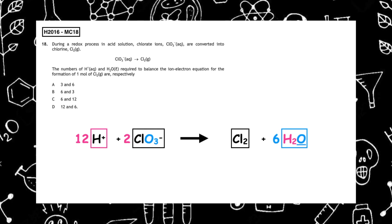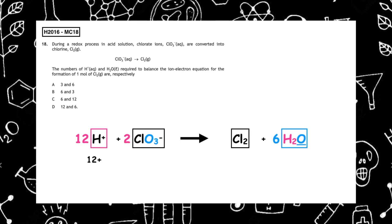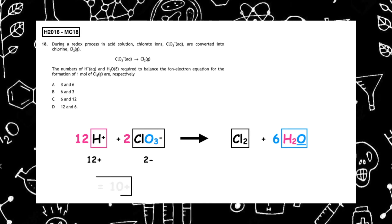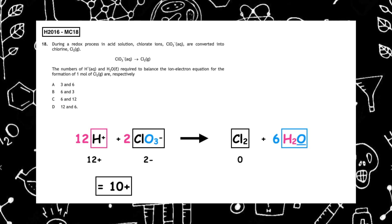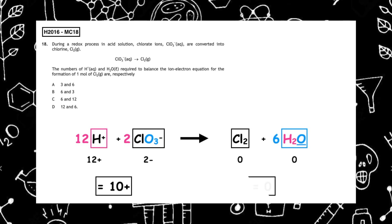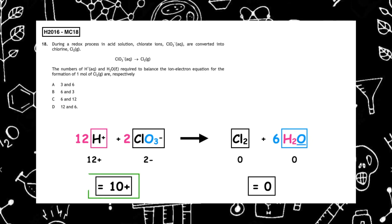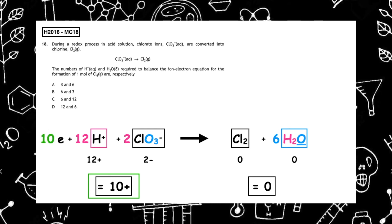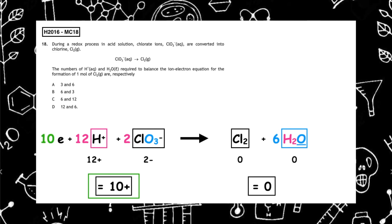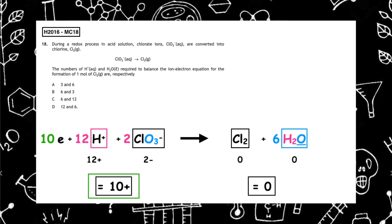For the overall charge: the hydrogen ions give 12 plus; the chlorate ion gives two minus, giving an overall charge of 10 positive on the left-hand side. On the right-hand side, chlorine doesn't have a charge, and water doesn't have a charge, so the overall charge is zero. So how many electrons would I have to add to the left-hand side? I would need to add 10 electrons to get it down to a charge of zero. The question asks for H⁺ and H2O respectively — we've got 12 hydrogen ions and six waters, so the correct answer is multiple choice D.